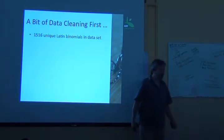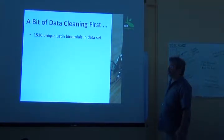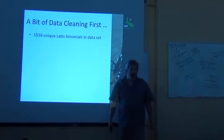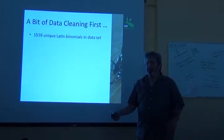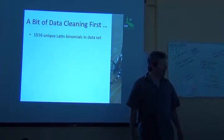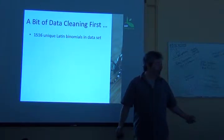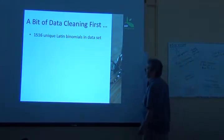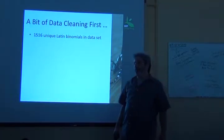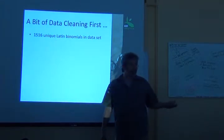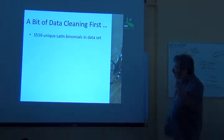I looked at the Latin binomials — the species names — and there were 1,516 unique Latin binomials. That should be screaming at us, because 1,500 to 2,000 species is like the maximum you ever see in a country, even in Brazil, Peru, and Colombia, which are the richest countries for birds on Earth. So right away I'm thinking there's some garbage in there. Probably misspellings and synonyms — that was my best guess. It actually was worse than that.